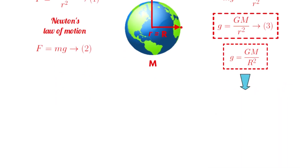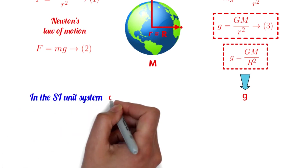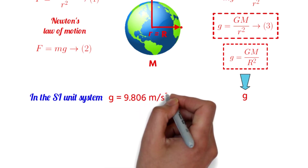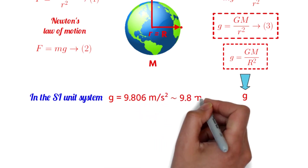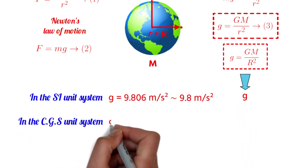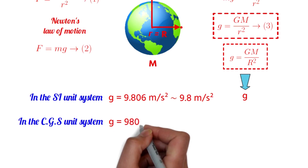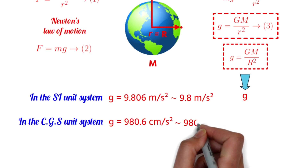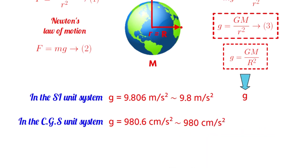From this relation, we find the average value of g on the surface of the Earth. In the SI unit system, we find the value of g is equal to 9.806 m per second square, which is nearly 9.8 m per second square. In the CGS unit system, the value of g is equal to 980.6 cm per second square, which is nearly 980 cm per second square.